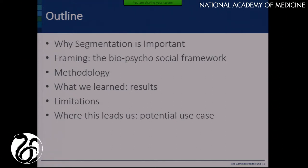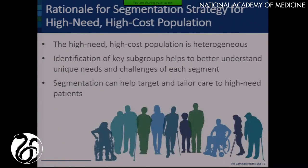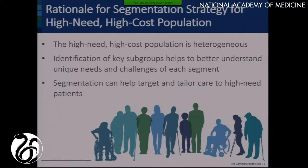We've already covered why segmentation is important. I'm going to talk a little bit about the biopsychosocial framework — you've heard a lot of it very eloquently stated from patients, caregivers, and also systems — and some of how we went through the process and our results. The reason to do this: it's a heterogeneous population. If we can figure out the key segments or subgroups, not only can we better understand the problem, but we can target and tailor programs and practices to meet their needs.